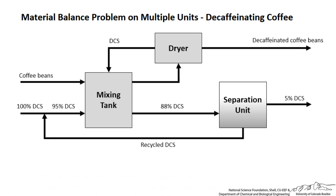I've drawn out a schematic of the process with some information that may have been collected from lab data. Coffee beans enter a mixing tank along with a decaffeinating solvent, written here as DCS. The beans are then removed to a dryer, which evaporates some solvent back into the mixing tank. Out of the dryer is the treated coffee beans with less caffeine, but also some solvent residue. Out of the mixing tank is the dirty solvent containing extracted caffeine, which enters a separation unit. One stream, heavy in solvent, is recycled back to the incoming feed and mixing tank, and the other stream is a high purity caffeine product.